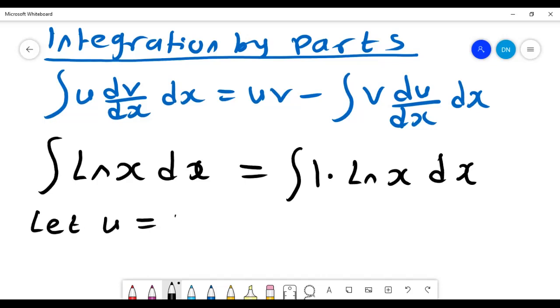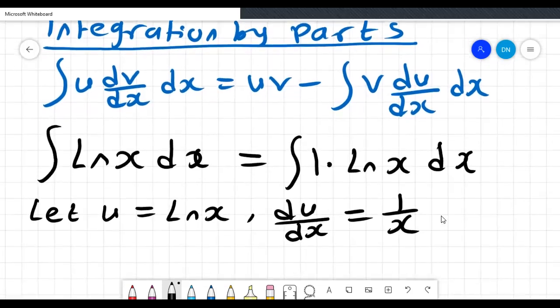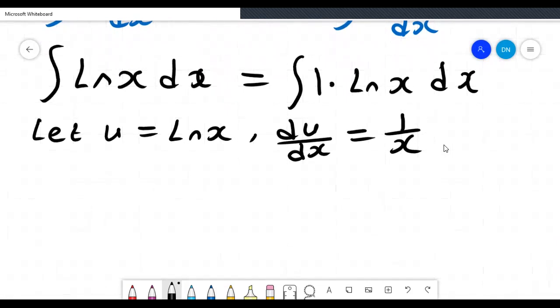u is expressed as ln of x, and then we can get du dx according to the general formula. The first derivative of ln of x is one over x.